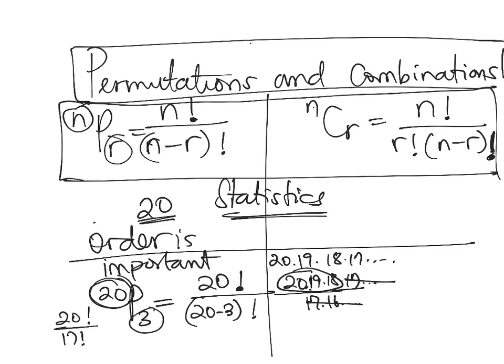So you just say 20 times 19 times 18, and that answer in this case is 6,840. These are the number of options if you had a problem asking you about permutations, where order is important. So you have 6,840 different options that could occur.